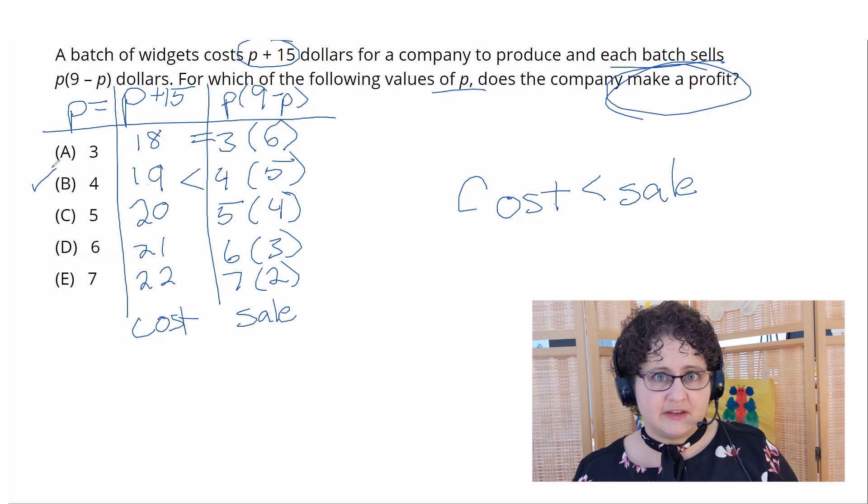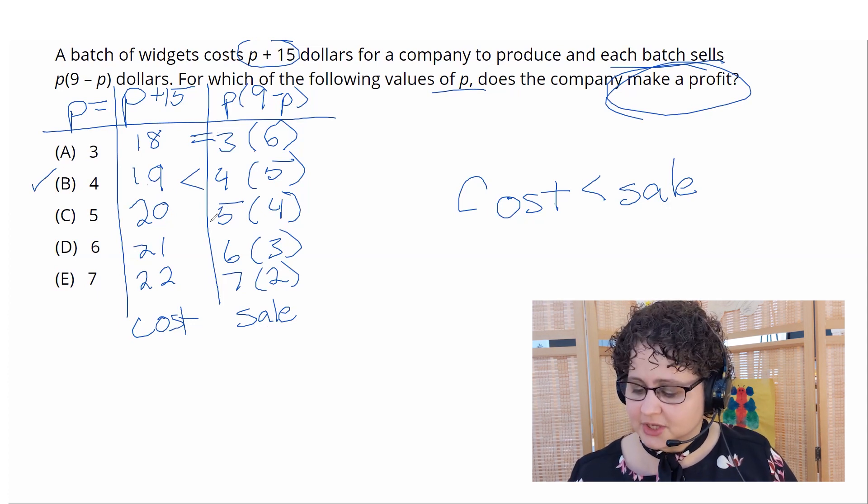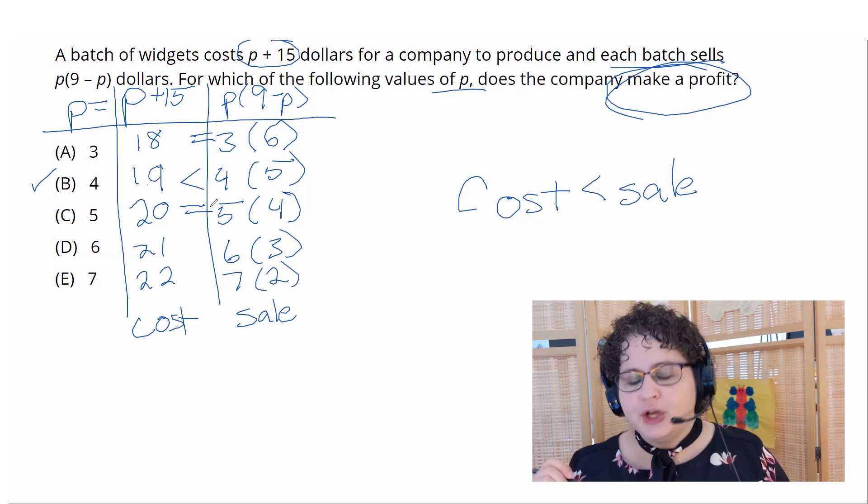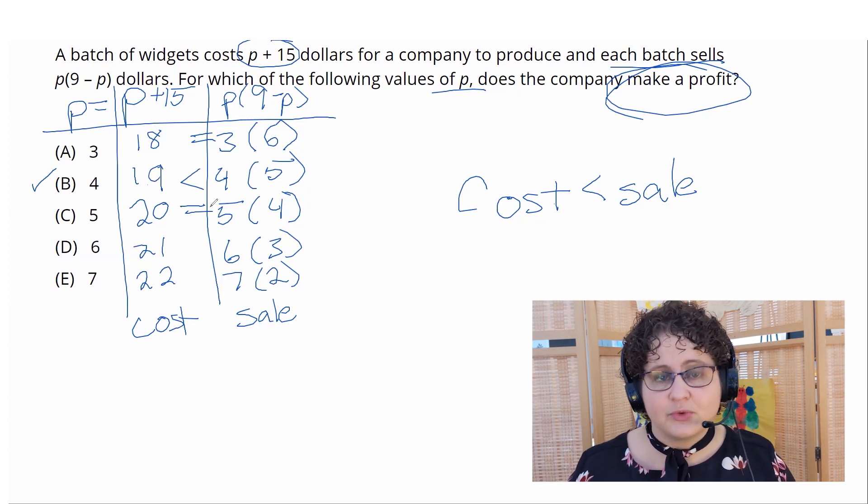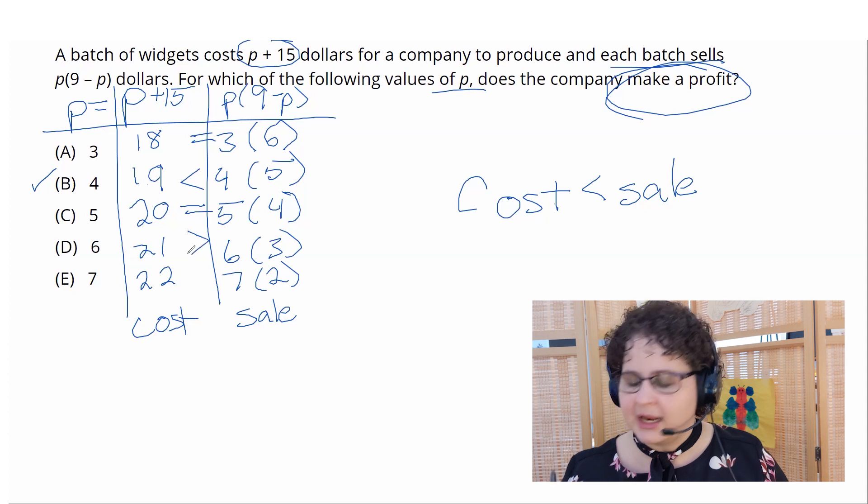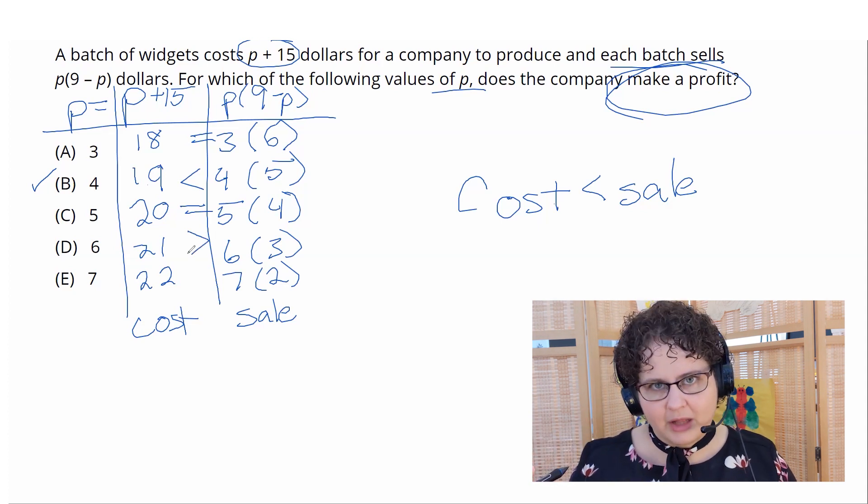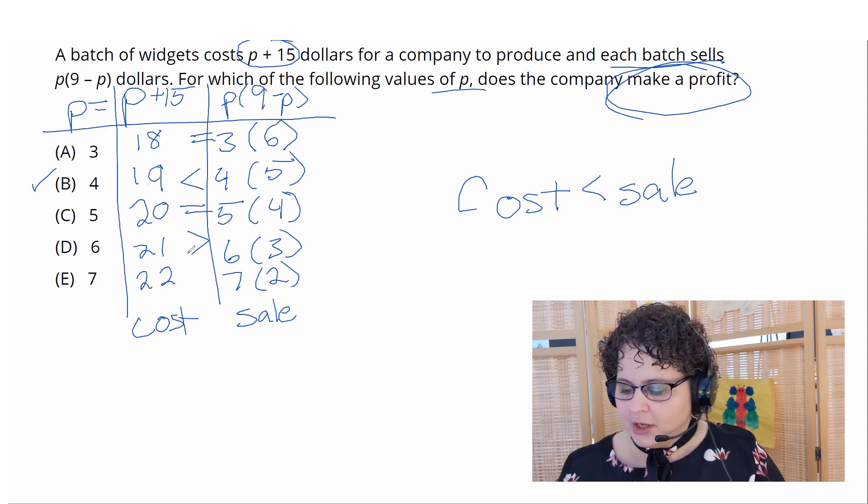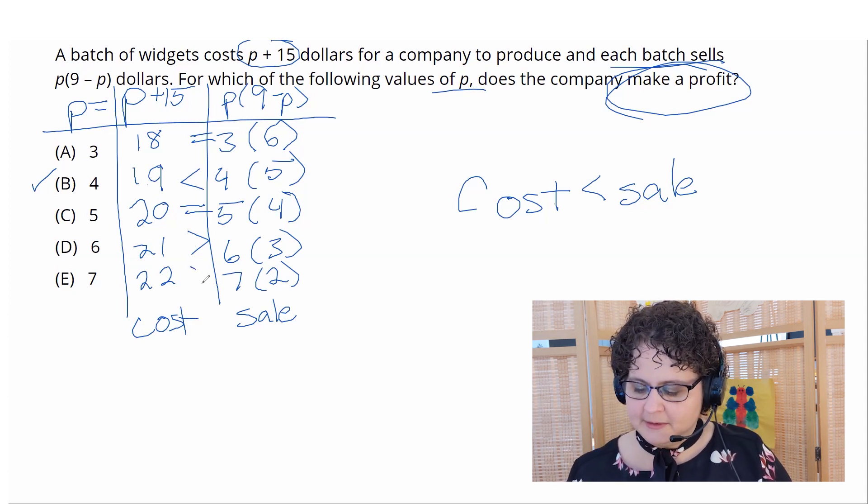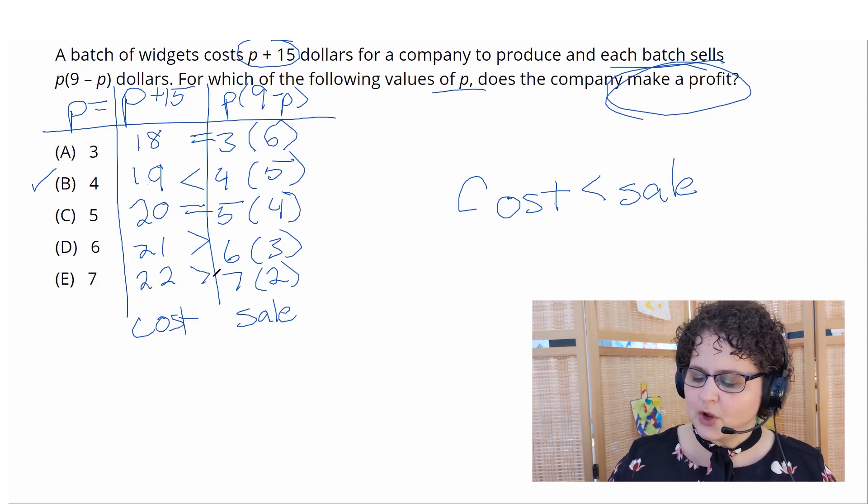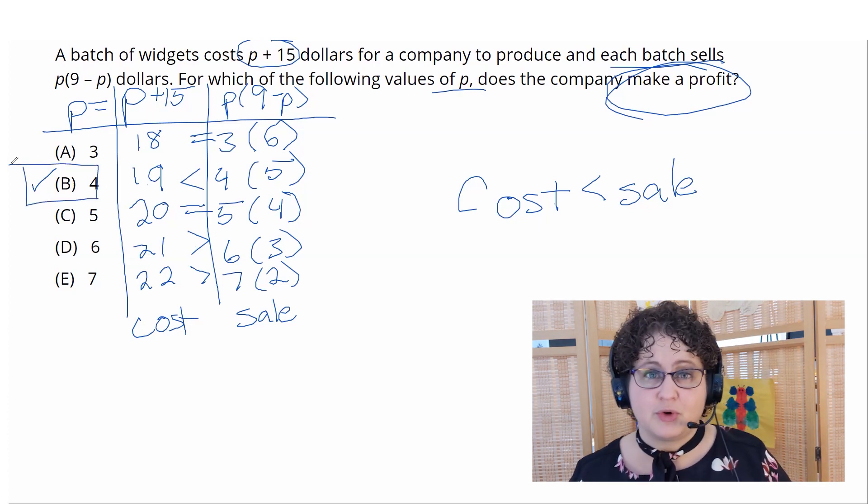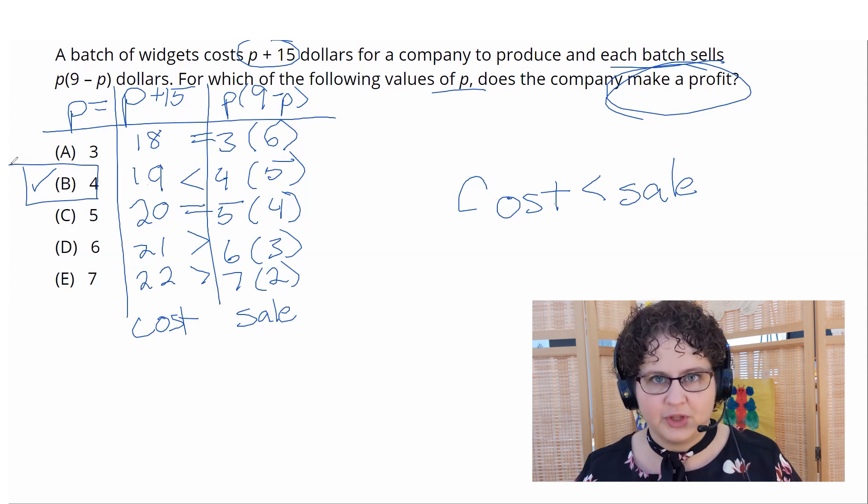So now I have 20 compared to 5 times 4. That's 20. So those guys are going to be the same thing. Not, in fact, the right answer. 21 compared to 6 times 3, which is 18. 21 is greater than. I've now flipped the inequality. That's the opposite of what I'm looking for. I'm now losing money. And 22 compared to 14, same problem.